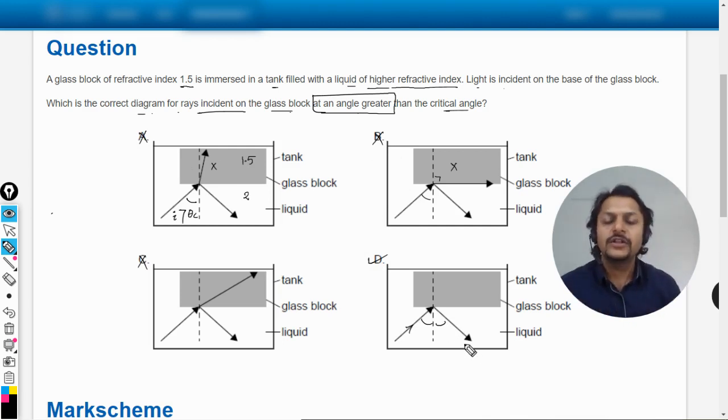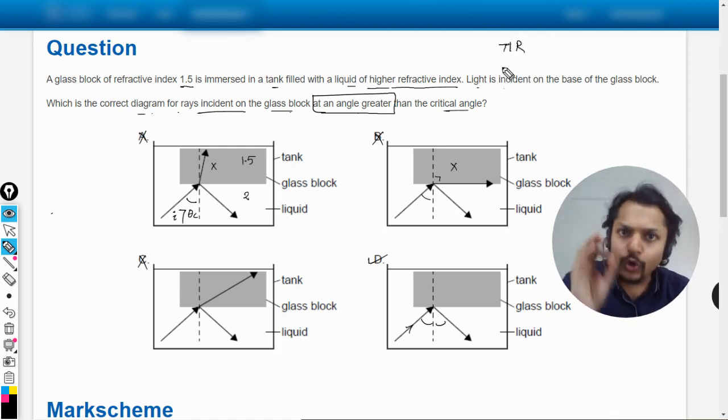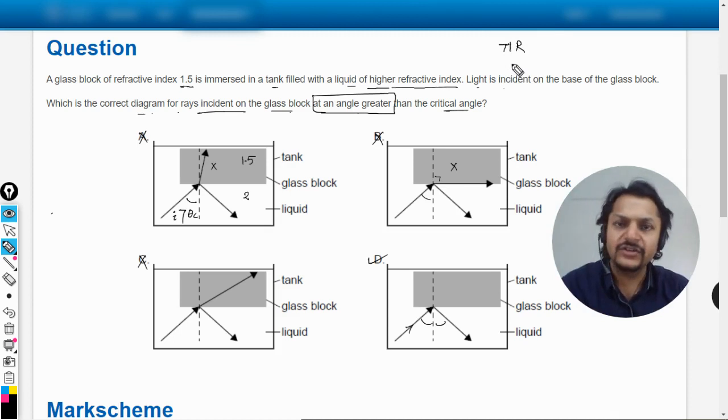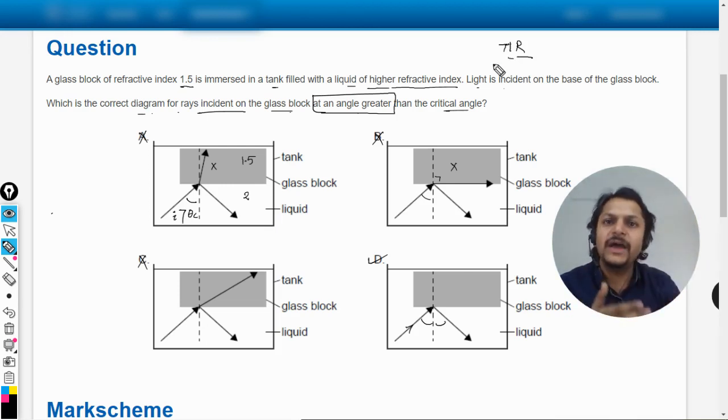My students, first of all try to understand TIR - total internal reflection. Why is the name reflection? It means everything is getting reflected back. Internal means into the same medium. Total means hundred percent of the energy that is incident is getting reflected.